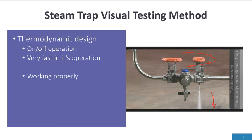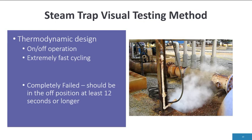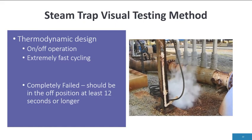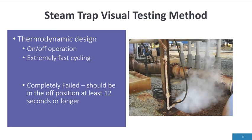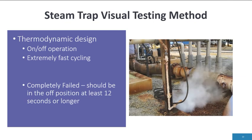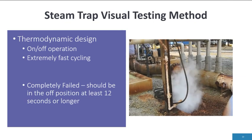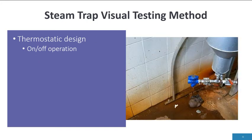This one is not working properly. If it's cycling extremely fast or completely blowing, then it has failed, and this one happens to be in the failed mode. The next type of steam trap is a thermostatic design steam trap, and this is also an on-off operation.